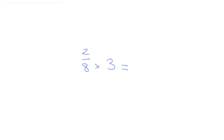Now let's try some problems. Our first problem of the day, we're going to do two-eighths times three. You're probably wondering how do I do this. We're going to multiply the same way we usually do — three times two, which equals six. And then the denominator stays the same: six-eighths.